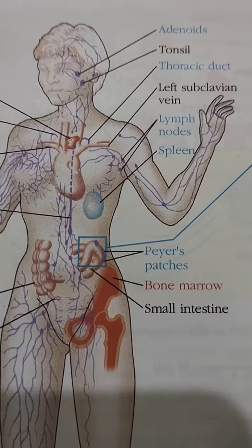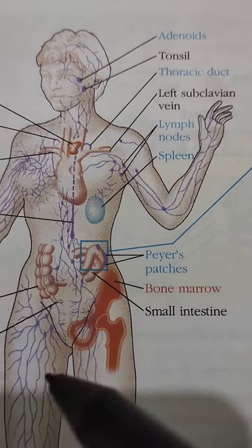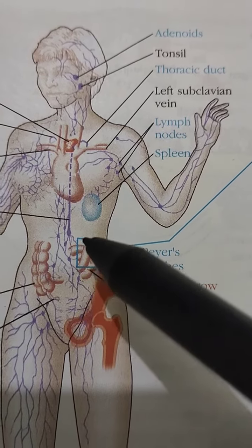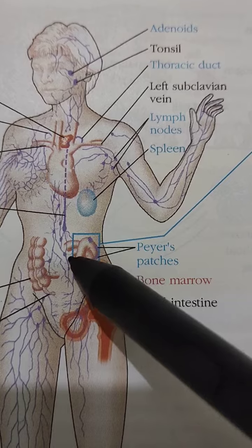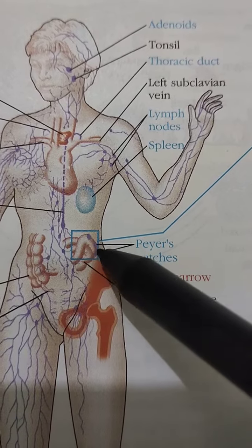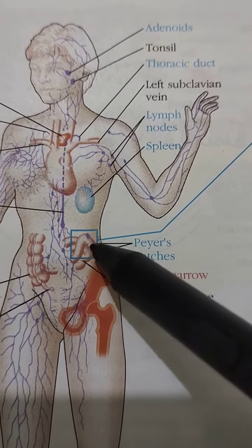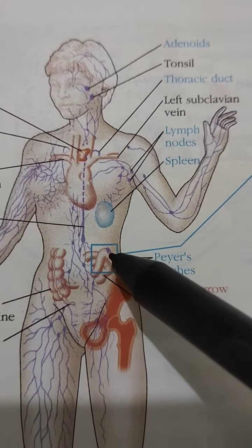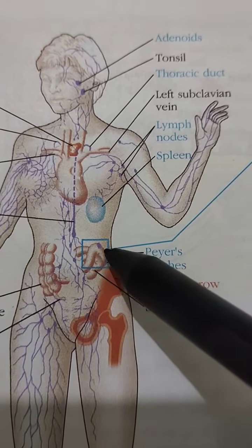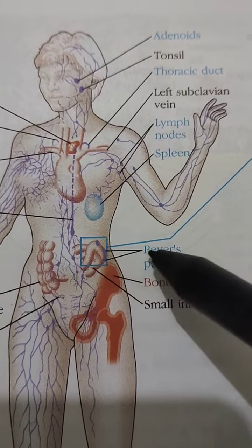Dear students, Peyer's patches is also part of lymphoid tissue that functions as an immune organ, and this is representative of MALT tissue.